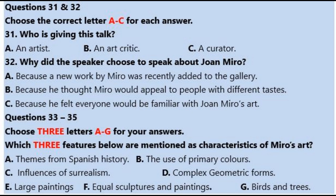Miro was born in Barcelona in 1893, the son of a goldsmith. He began to show talent very early, and in 1926 went to Paris, where he was drawn to the Surrealists of Montparnasse. He did not define himself as a Surrealist, however. He preferred to stay free to experiment with other artistic styles as he wished.